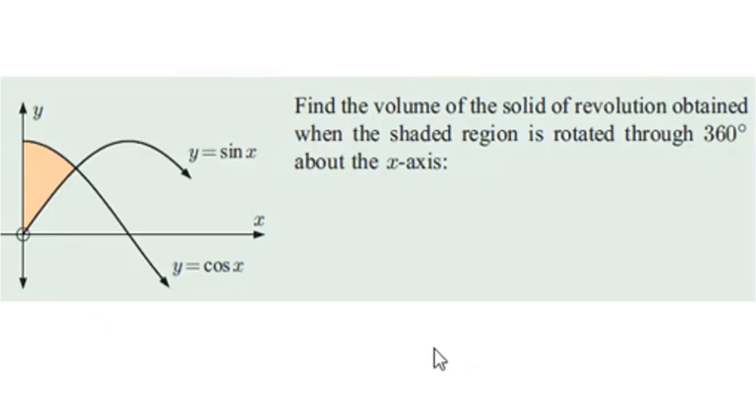Find the volume of the solid of revolution obtained when the shaded region is rotated through 360 degrees about the x axis. First of all we need to figure out this intersection. This intersection will be pi over 4. You can use graphing calculator to get that. Then cosine is above this sine x. So we do the cosine x rotation first minus this rotation by sine x.